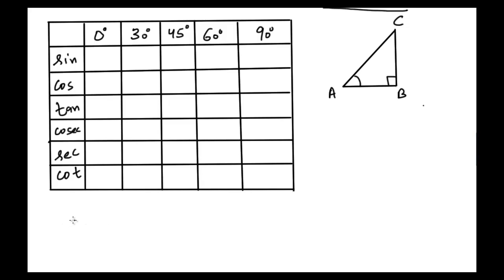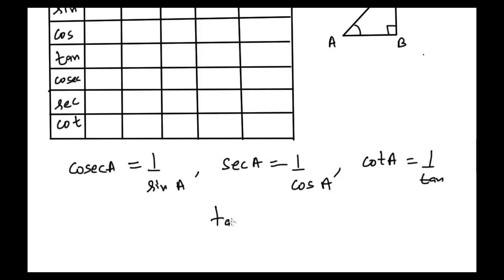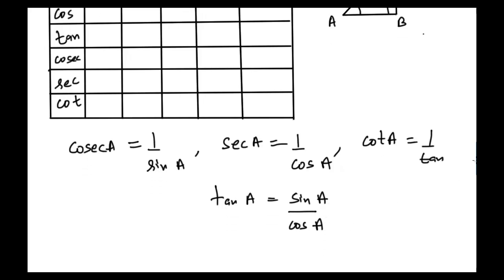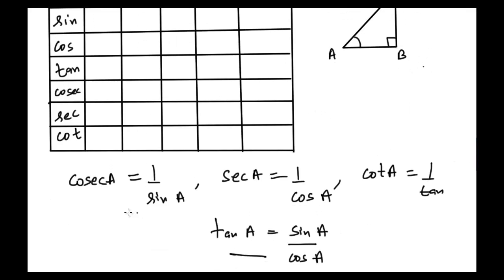Before going through the video, there are some rules you should be aware of. First, cosecant is the reciprocal of sine. Secant is the reciprocal of cosine. Cotangent is the reciprocal of tangent. And tangent of any angle equals sine of that angle divided by cosine of that angle. These four identities are needed to fill the table.